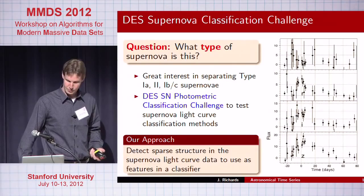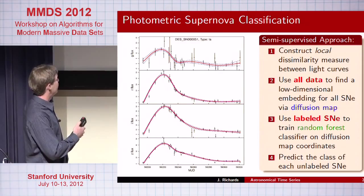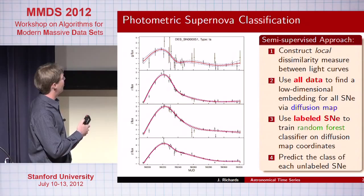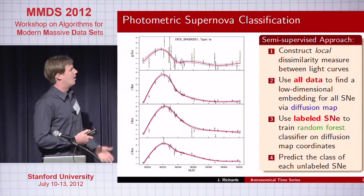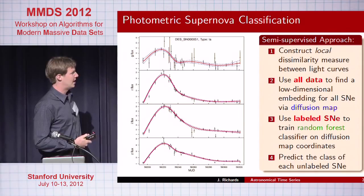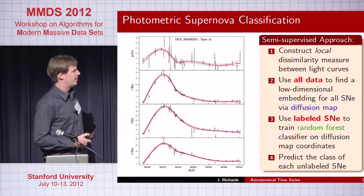Here is data for a single supernova — the data points are black dots with a single spline model in each of the bands. Our approach was to construct a local dissimilarity measure between light curves, then use the entire dataset of labeled plus unlabeled data to find a low-dimensional embedding using a diffusion map manifold learning method.